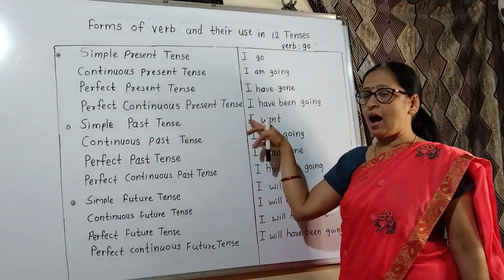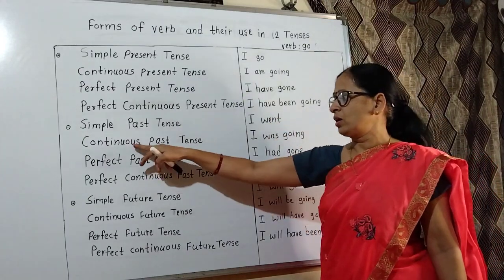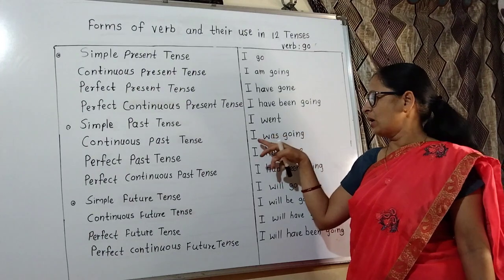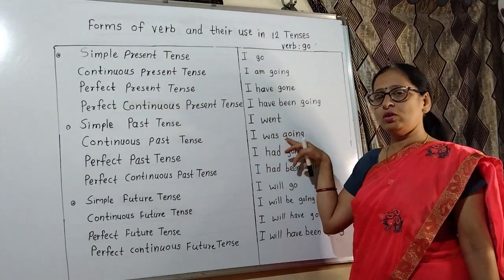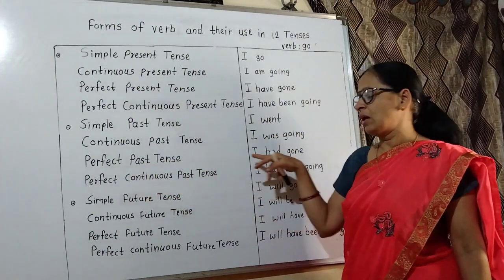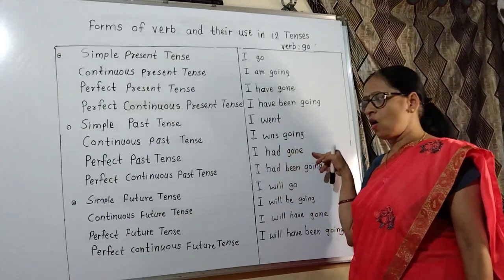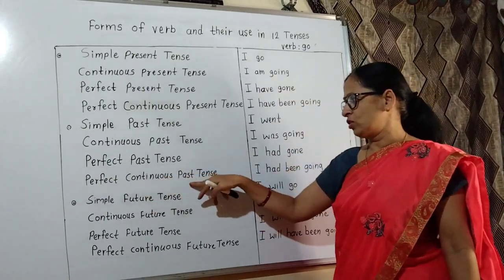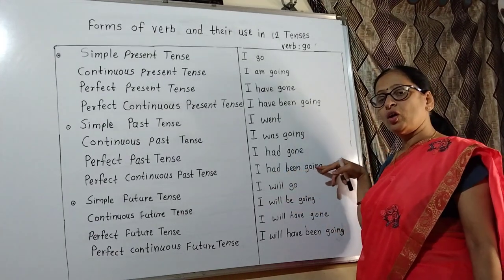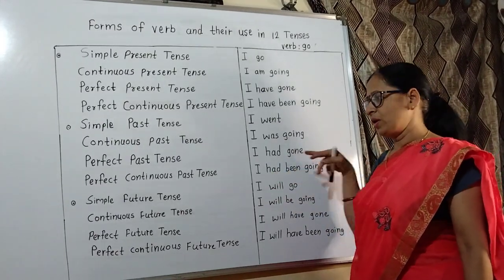Simple past is I went. Continuous past is I was going. Perfect past is I have gone. Perfect continuous past is I have been going.